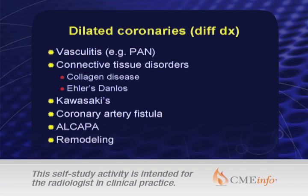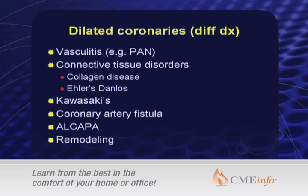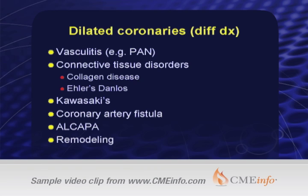I'd be thinking about vasculitis or connective tissue disease — those would be the big ones — and Kawasaki's. Most of these other things give you focal abnormalities, either focal aneurysms or involvement of one system, but not generalized dilatation of the entire coronary artery system. So mainly I'd be thinking about those first two, and maybe anomalous origin of the left coronary artery from the pulmonary artery — a rare entity, somewhat under-recognized, and rarer than anomalous coronary arteries.